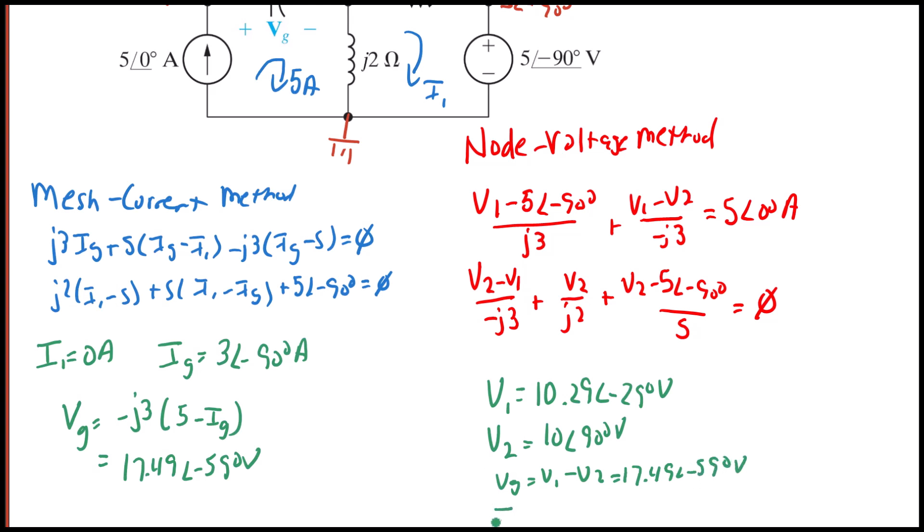And finally, IG. IG should be equal to V1 minus five angle negative 90 degrees divided by J3. And that should also be the same as what we got before. So that is three with an angle of negative 90 degrees.